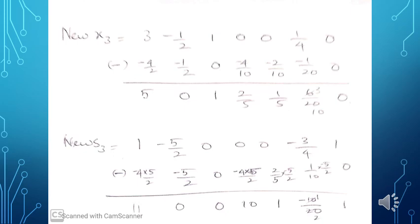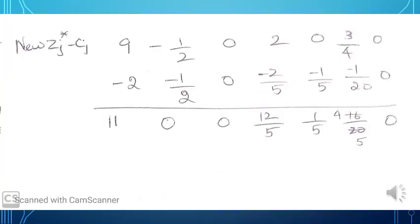On subtracting, new S3 = [11, 0, 0, 10, 1, -1/2, 1]. For the new zj* - cj: old zj* - cj [9, -1/2, 0, 2, 0, 3/4, 0] minus (-1/2) × new pivot equation [4, 1, 0, 4/5, 2/5, 1/10, 0] = [-2, -1/2, 0, -2/5, -1/5, -1/20, 0]. Subtracting gives new zj* - cj = [11, 0, 0, 12/5, 1/5, 4/5, 0].